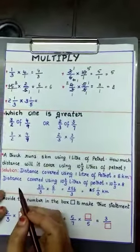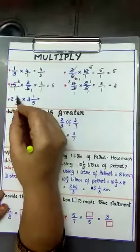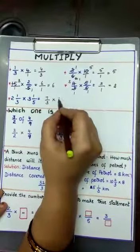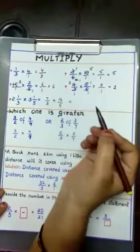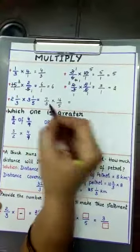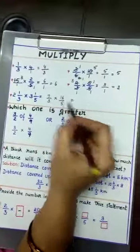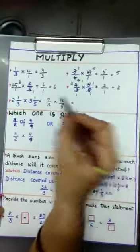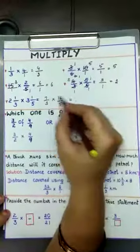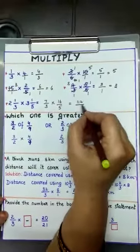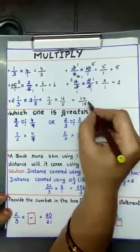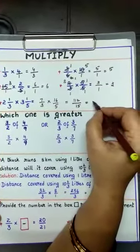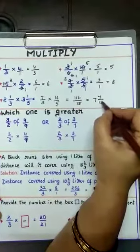The last sum has 2 mixed fractions — change them into improper fractions. 3 twos are 6 plus 1 gives 7/3. And 5 threes are 15 plus 1 gives 16/5. Now check for simplification: 7 and 3, 3 and 16, 16 and 5, 5 and 7 — no common factors. So directly multiply: 7 times 16 is 112 by 3 times 5 is 15. Converting to mixed fraction: 15 sevens are 105, remainder 7. So the answer is 7 and 7/15.